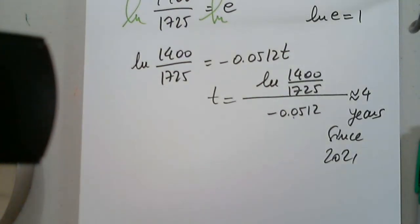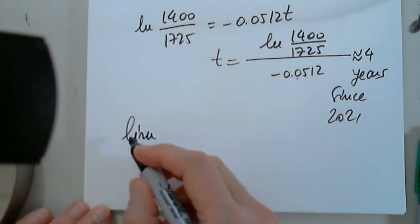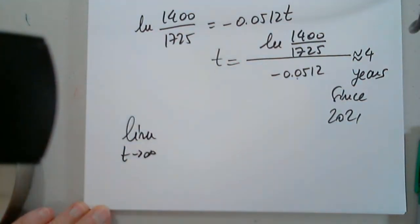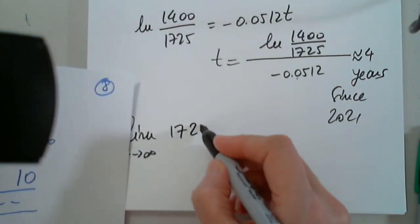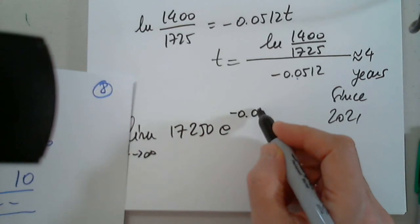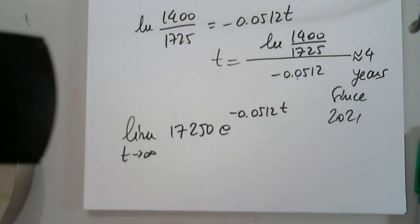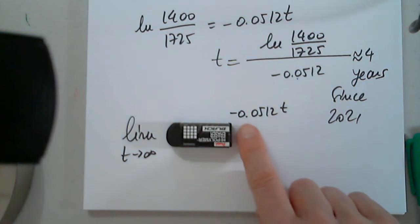And now they're also asking us to find that limit. Limit as T approaches infinity of P(T). Let's analyze that. P(T) = 17,250·e^(-0.0512t). And remember how we do this. First, we start where T is from the inner function. So a negative number times T when T approaches infinity. So the question is, where is this going?